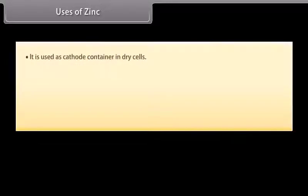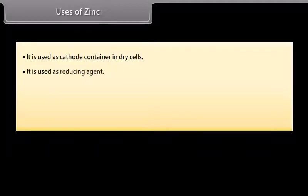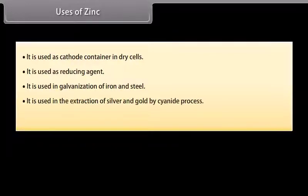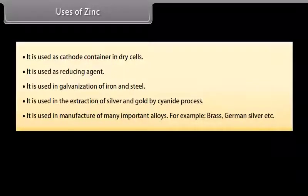Uses of zinc. It is used as cathode container in dry cells. It is used as reducing agent. It is used in galvanization of iron and steel. It is used in the extraction of silver and gold by cyanide process. It is used in manufacture of many important alloys. For example, brass, german silver etc.